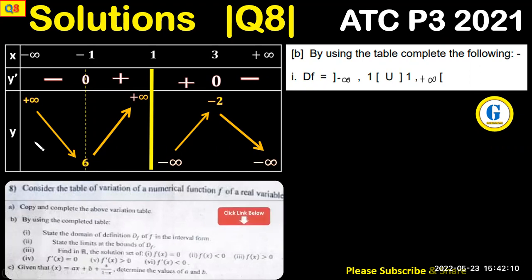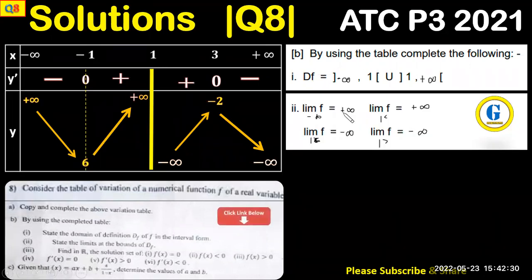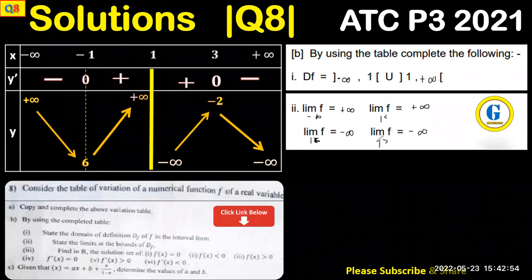Next, state the limits at the bounds — it does not say calculate, just state. As x tends to negative infinity, the function tends to positive infinity. As x tends to positive infinity, it tends to negative infinity. The limit as x tends to 1 from below is positive infinity, and as x tends to 1 from above is negative infinity. As x tends to positive infinity we have negative infinity.